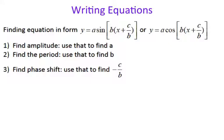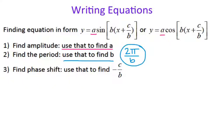There are three things we need to find using the graph. We need to find the amplitude, because that's going to help us find a — the number in front of your trig function. We need to find the period, because you can use the period to solve for b, using the formula 2π divided by b. And b will be the number in front of x. The other thing we need is the phase shift, which tells us what goes inside the parenthesis with x.